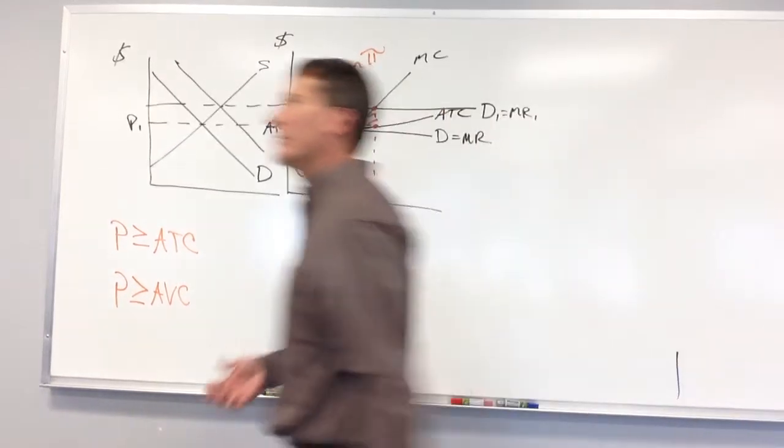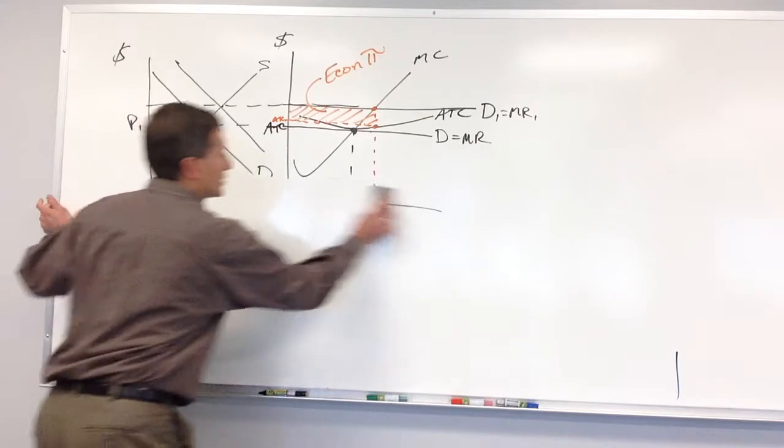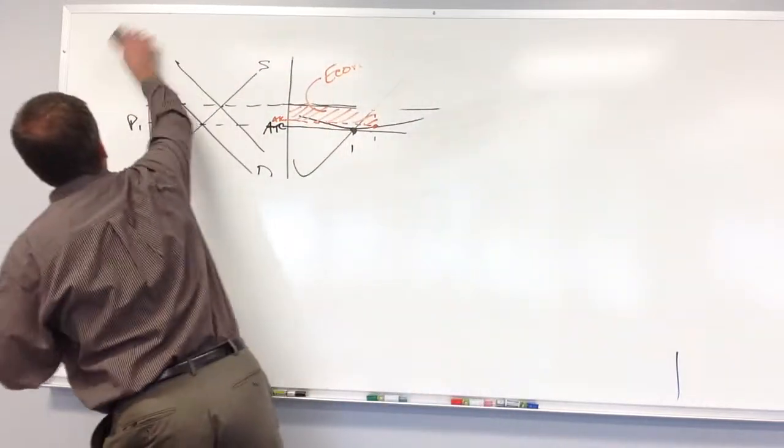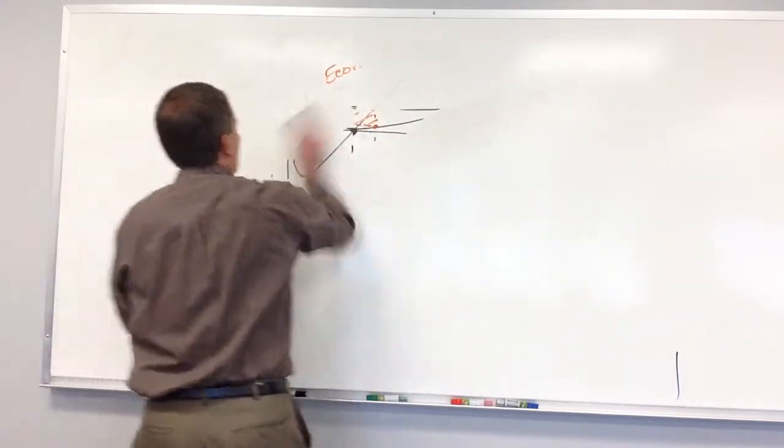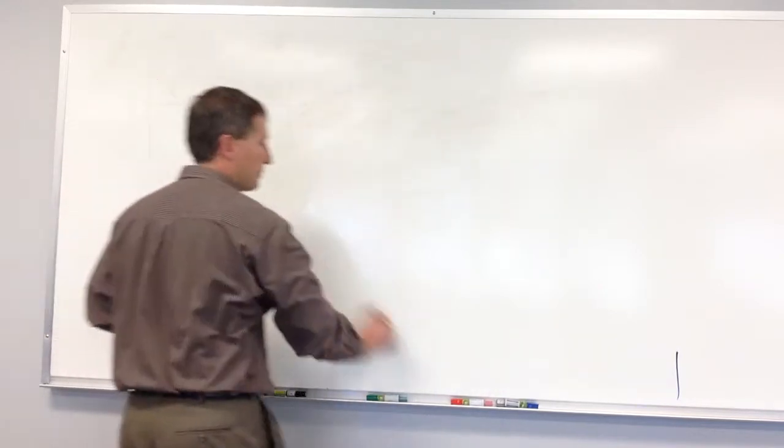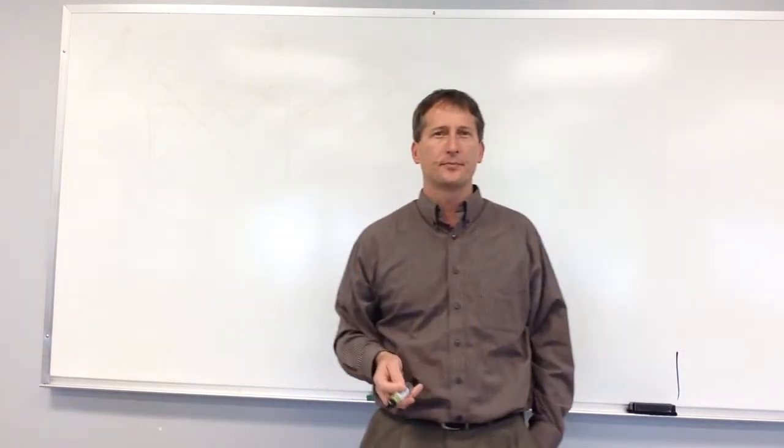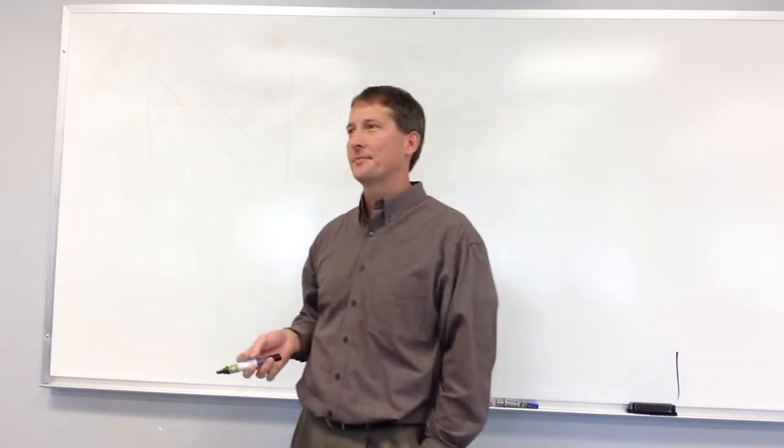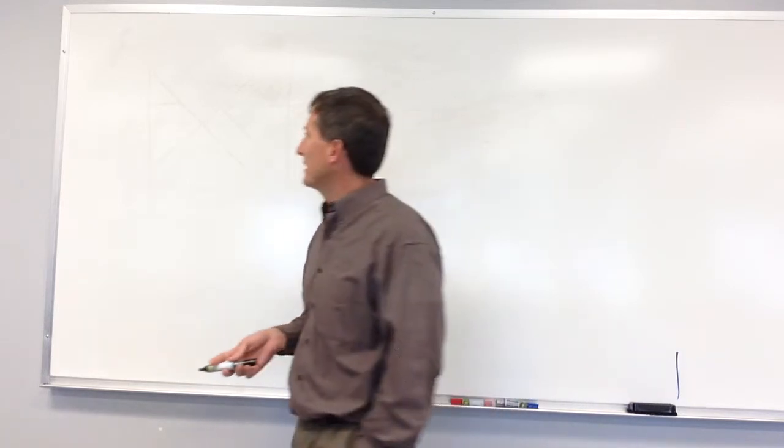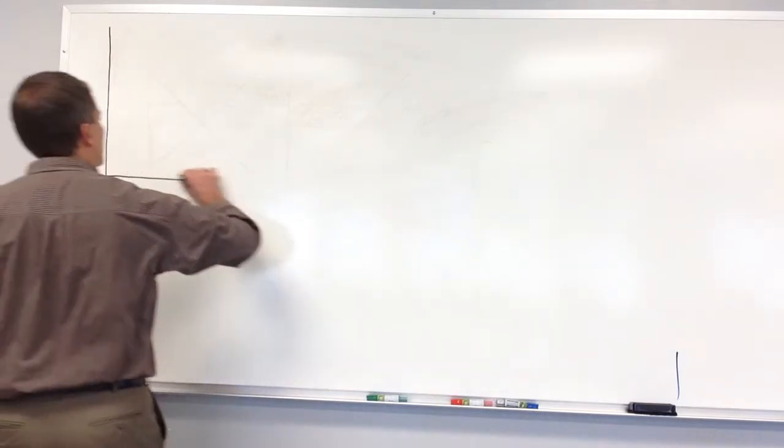So this whole time we've been looking at cheeseburgers and pizza and other things. What were the characteristics of private goods? Not public goods, but private goods. What are the two characteristics of private goods? Private goods like beer and pizza are rival and excludable.